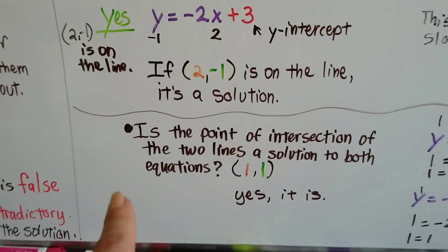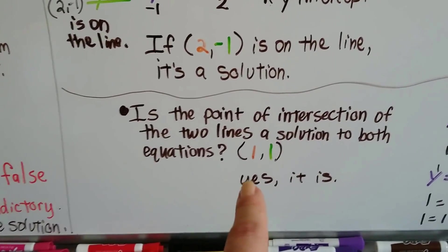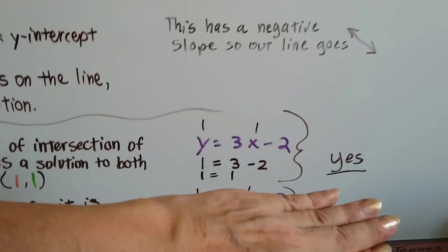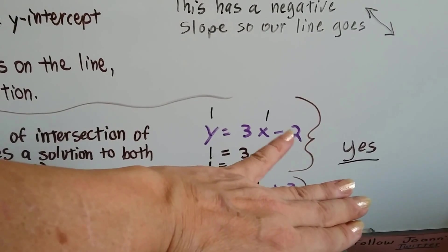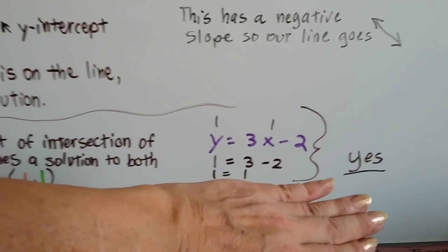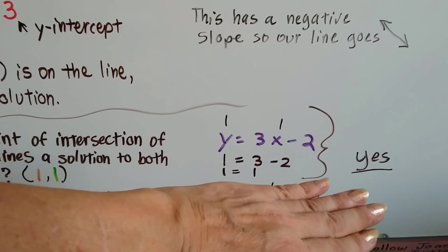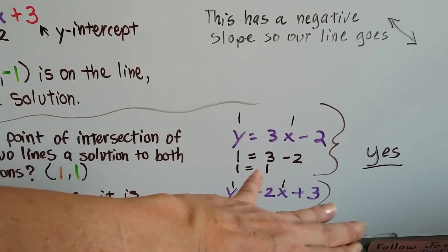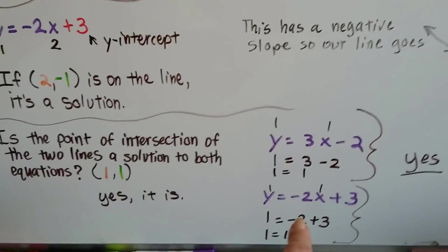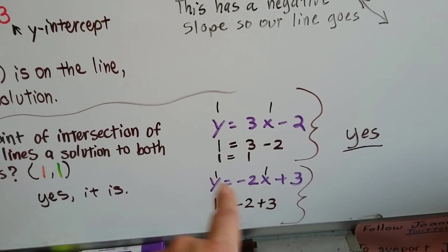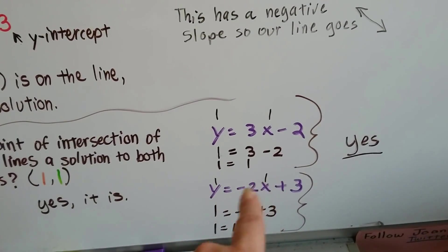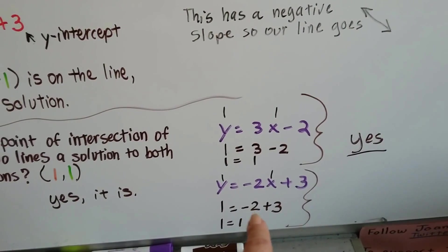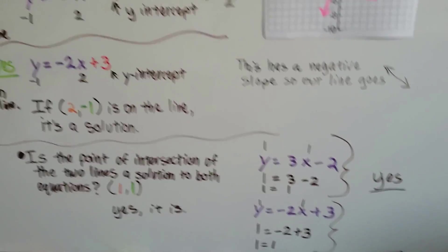Now, is that point of intersection for the two lines a solution to both equations? Yeah, it is. 1, 1 is a solution to both of those equations. Let's check it out. Here's the first one with that negative 2 for the y-intercept and the 3 slope. If we plug in 1, 1 for x and y, that means 1 equals 3 times 1 minus 2. Well, 3 times 1 is 3. So that means 1 equals 3 minus 2. And yeah, 1 does equal 1. Now for our second equation, if we plug in 1, 1 for our x and y, we get 1 equals negative 2 times 1, which is a negative 2 plus 3. Negative 2 plus 3 is 1. 1 equals 1. Yeah! It worked out for both of them.